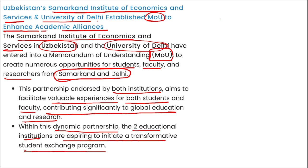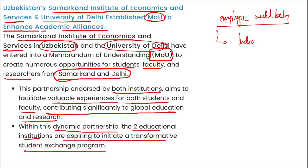What is the rank of India in the Employee Well-being Index? India is at second position. Turkey was on first position and Japan was on the lowest rank in this Employee Well-being Index.